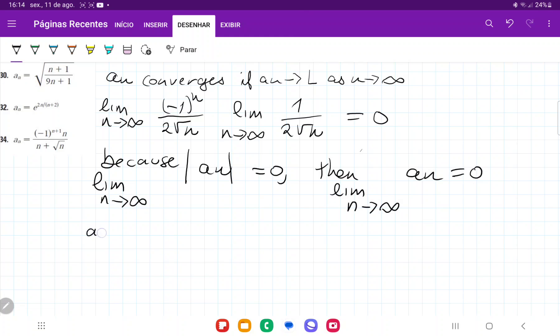So a_n approaches 0 as n approaches infinity, therefore a_n must converge. All we've done here is shown that the absolute value limit tends to 0, and so the sequence must also tend to 0.